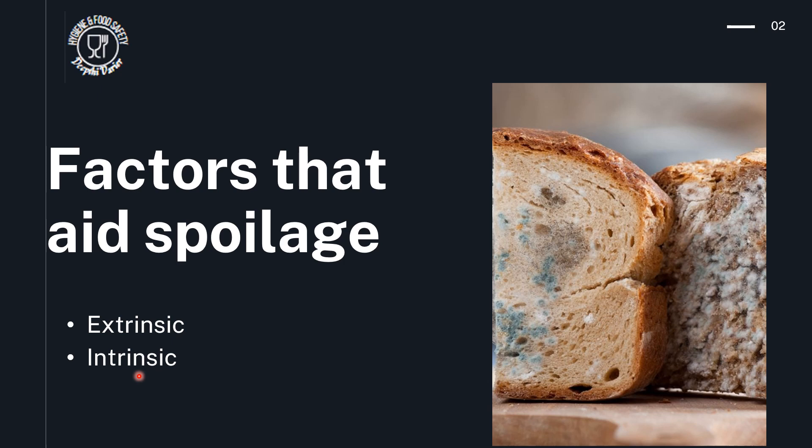It can also be the structure of the food. For example, a natural covering — some foods like eggs have an eggshell or bananas have a skin on them. These are natural coverings which protect the food from external influences or from organisms entering in. But if there is any kind of break or crack in these external coverings, then that again can aid in the spoilage. Even the nutrient content — some foods are more prone to spoilage because they have more nutrient content compared to other foods.